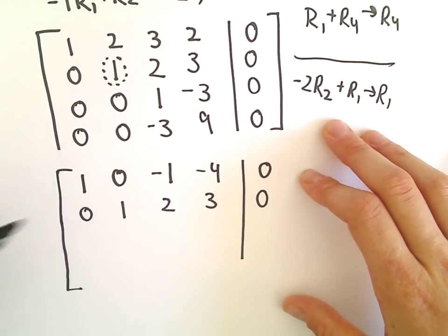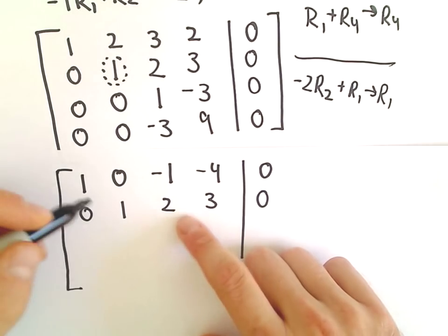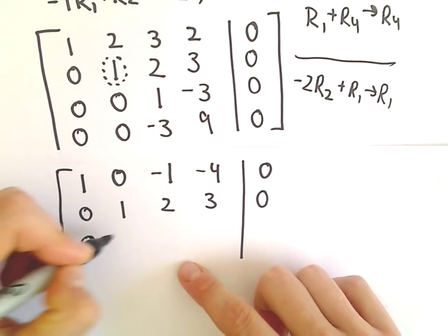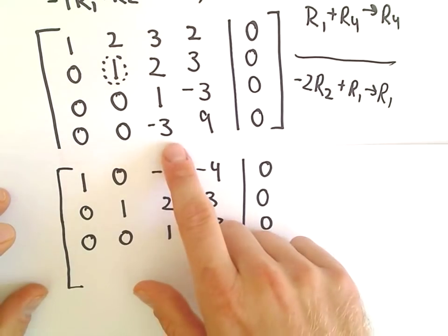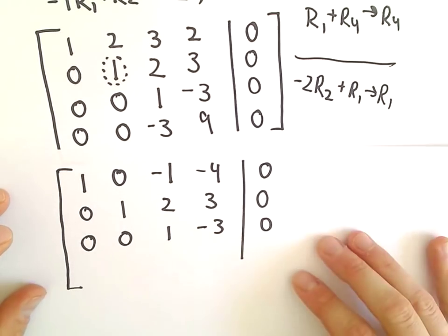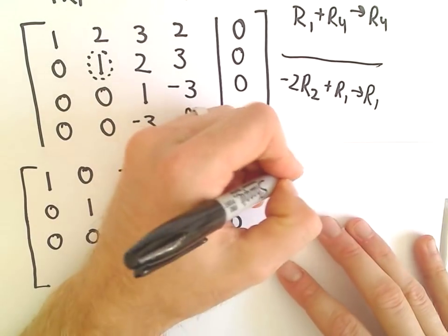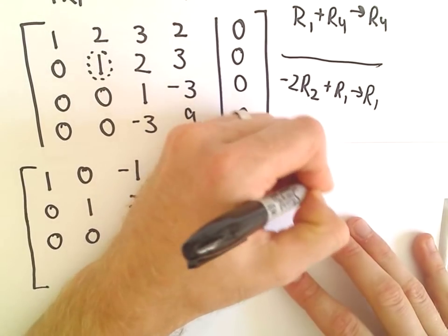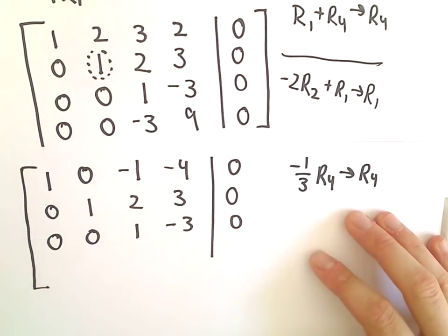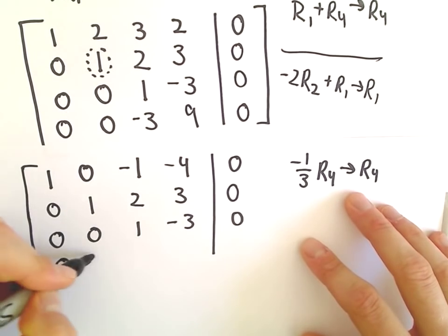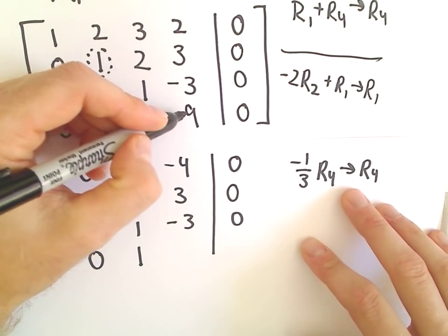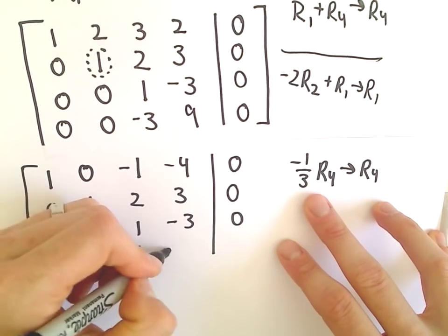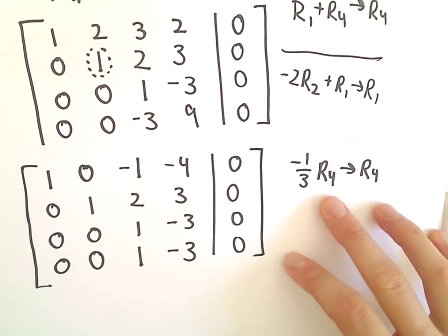The next thing I'm going to do here is, I'm just going to leave the third row alone. The fourth row, I notice that everything's divisible by 3. I'm even going to divide it by negative 3. So I'm going to do negative 1 third my fourth row. And that's going to turn into my new fourth row. So I'll have 0, 0, negative 3 divided by negative 3 is 1. 9 divided by negative 3 is going to be negative 3. And that leaves us with a 0.